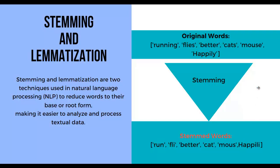It is important to note that stemming is a heuristic process, and different stemming algorithms may produce different results. Some common stemming algorithms include Porter Stemmer and Snowball Stemmer, which we will discuss shortly. In NLP use cases such as sentiment analysis, spam classification, restaurant reviews, etc., it is crucial to determine whether a word is positive or negative. In these use cases, we can use stemming to obtain the base form of words. Let me show you this practically — let's jump to Google Colab.